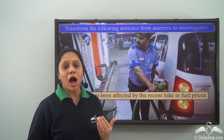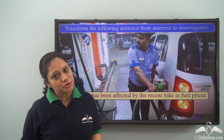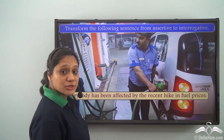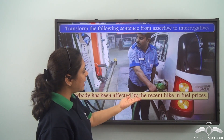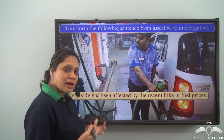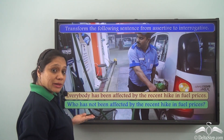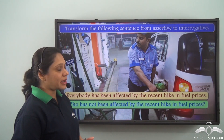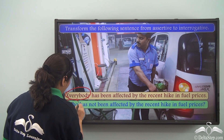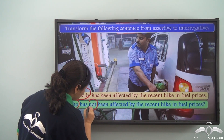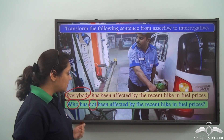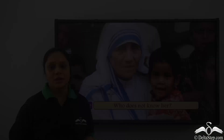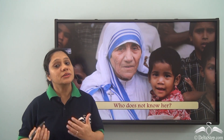Now let us do an exercise: transform the following sentence from assertive to interrogative — 'Everybody has been affected by the recent hiking fuel prices.' The interrogative form is: 'Who has not been affected by the recent hiking fuel prices?' We have replaced 'everybody' with 'who' and introduced 'not' to keep the meaning of the sentence the same in its interrogative form.